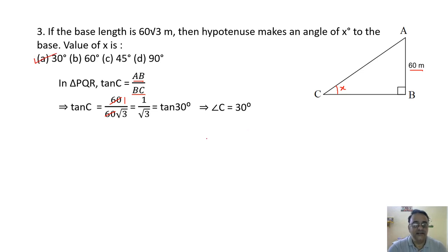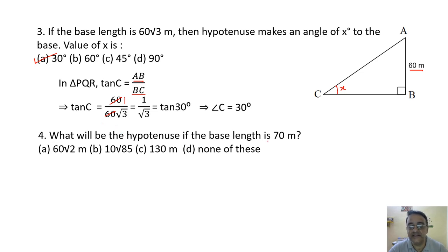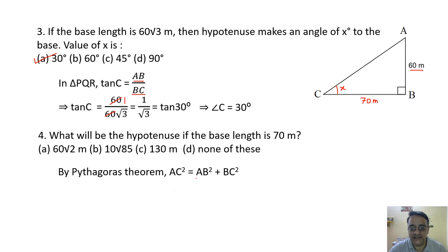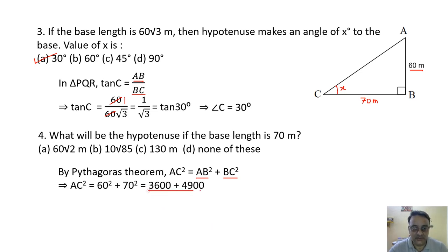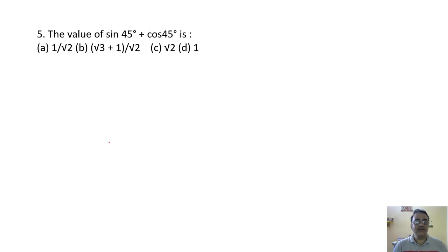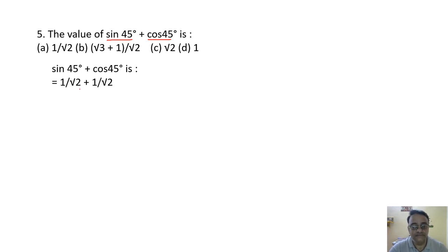Question 4: If base length is 70 meter and height is 60m, find hypotenuse. AC² = 60² + 70² = 3600 + 4900 = 8500 = 85 × 100, so AC = 10√85. The correct option is option B. Question 5: sin 45° + cos 45° = 1/√2 + 1/√2 = 2/√2 = √2. The correct option is option C.